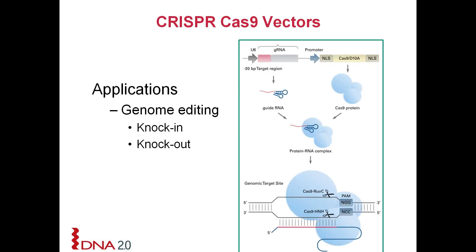CRISPR-Cas9 is quickly emerging as a popular application for genome editing. It's replacing zinc finger nucleases and TALENs because of its ease and effectiveness. CRISPR-Cas9 can be used for knock-in or knock-out of your particular gene or region in a genome.